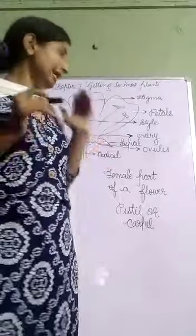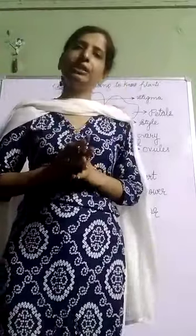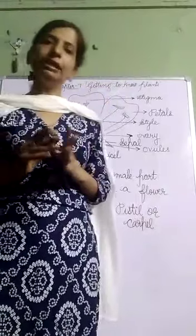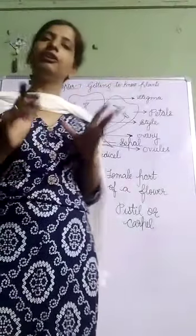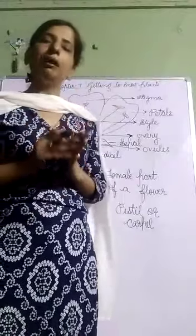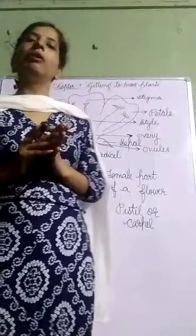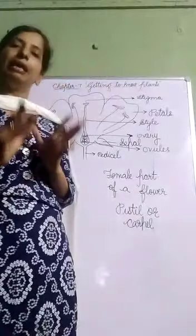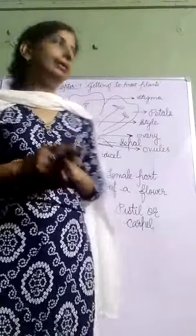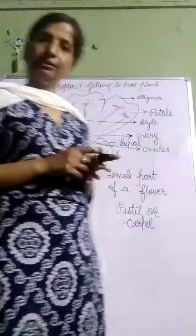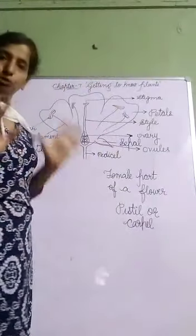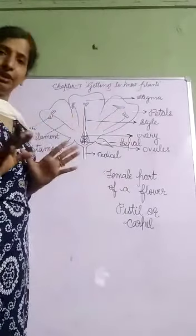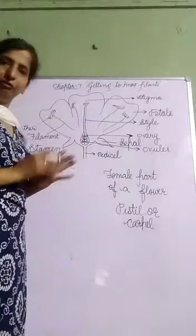So now let us recall. The green leaves present on a flower are called sepals. The colorful leaves of a flower are called petals. The female part of a flower is called pistil or carpel. And the male part of a flower is called stamen. Stamen has two parts — anther and filament. Pistil has three parts — stigma, style, and ovary.